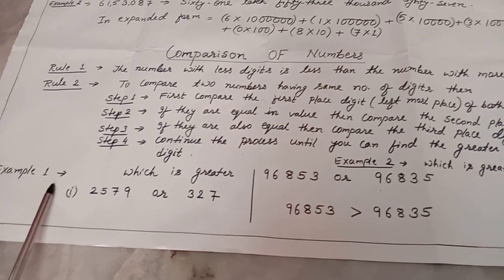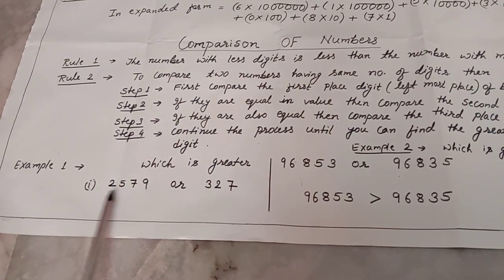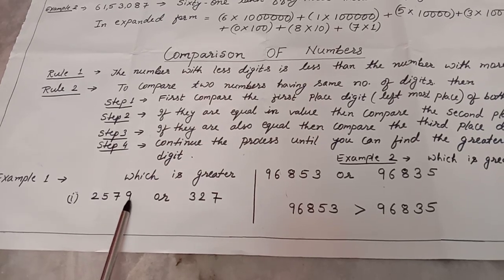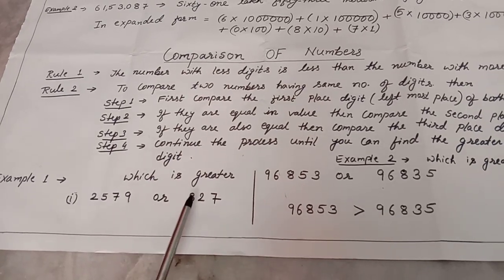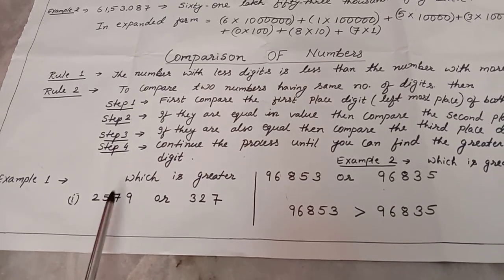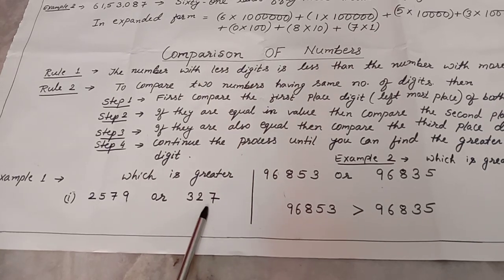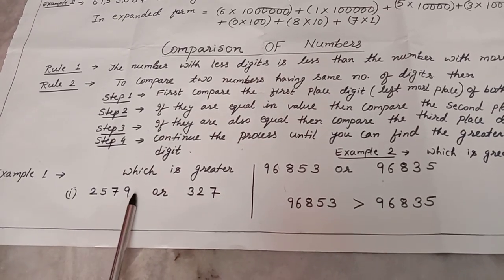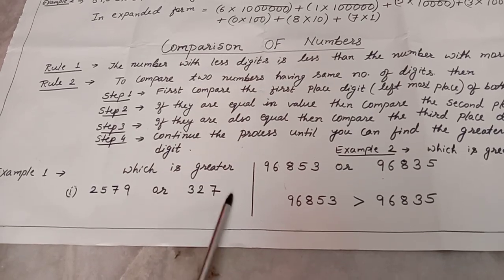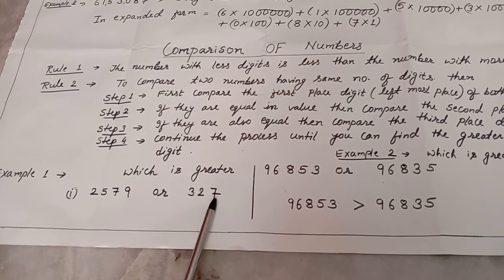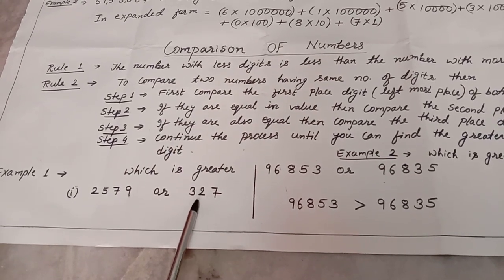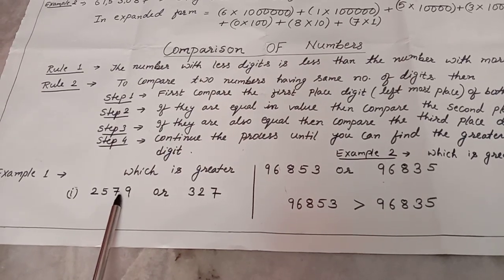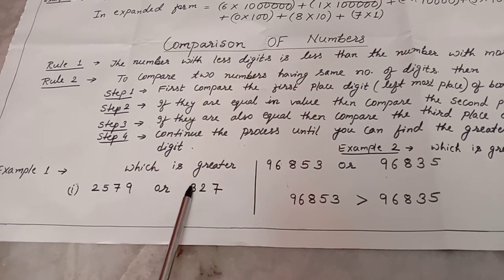For example, consider the two numbers 2579 and 327. Which one is greater? The first number has 4 digits and the second number has only 3 digits. So it is very clear that the number with 4 digits is always greater than the number with 3 digits.